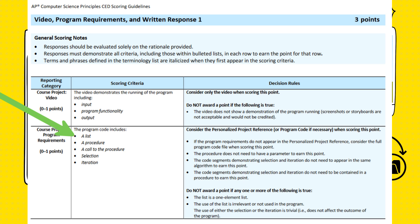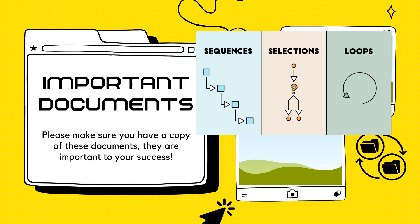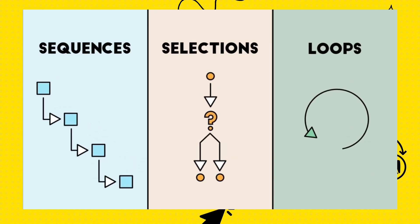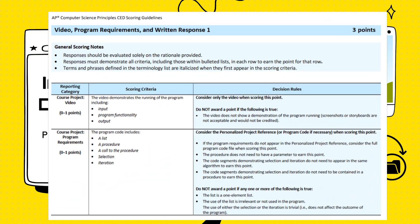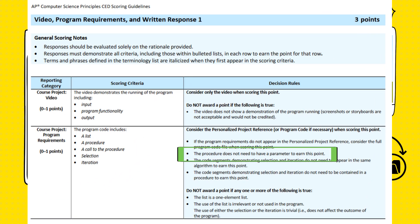For Row 2, you need a list or library, and sequencing, selection, and iteration. Sequencing is just a function — something that goes step by step. Selection is an if-else statement. And iteration is just a for loop. Note that you do not need a parameter to earn a point in this row, but you will need one in a future row, so it's best to include one in your main function.